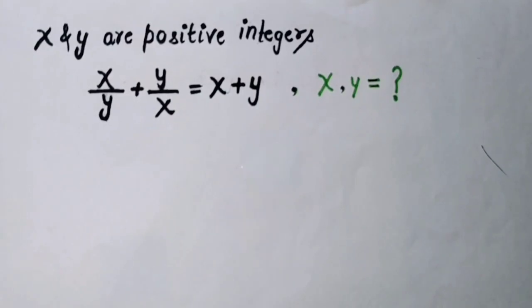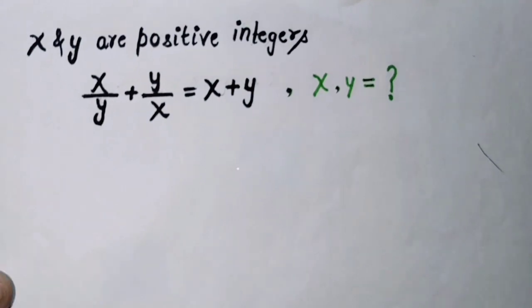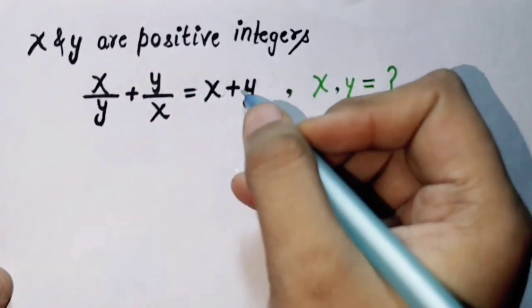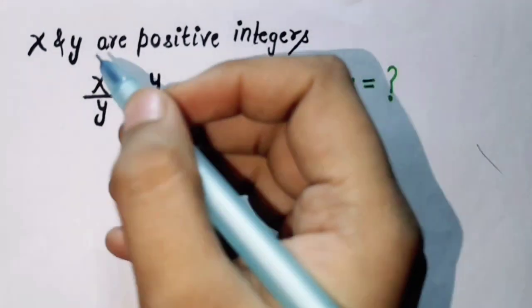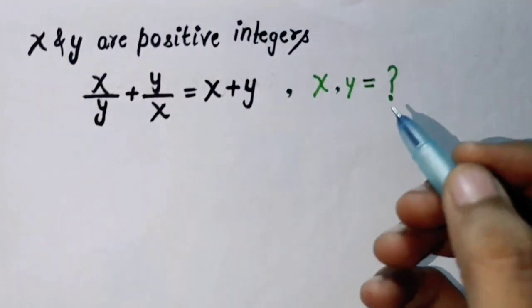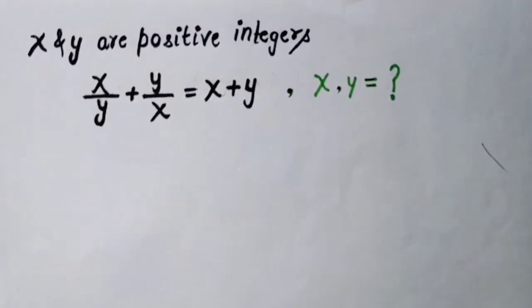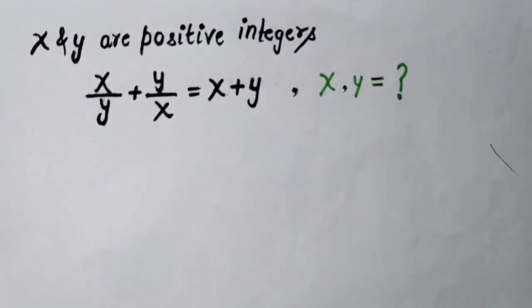Hello student, today in this video we are going to discuss this rational equation: x over y plus y over x equals x plus y, where x and y are positive integers. We are going to find x and y value. How to solve this problem? Pause the video, try to solve first. Okay, let's get started with the solution.